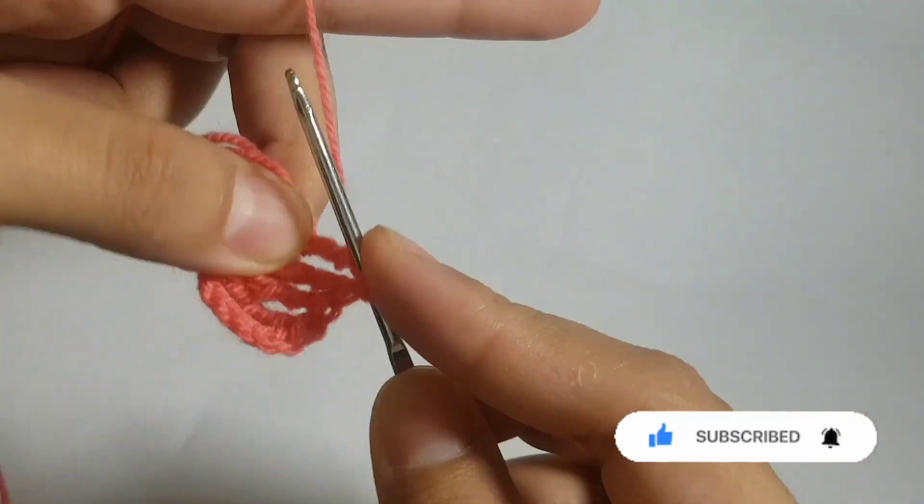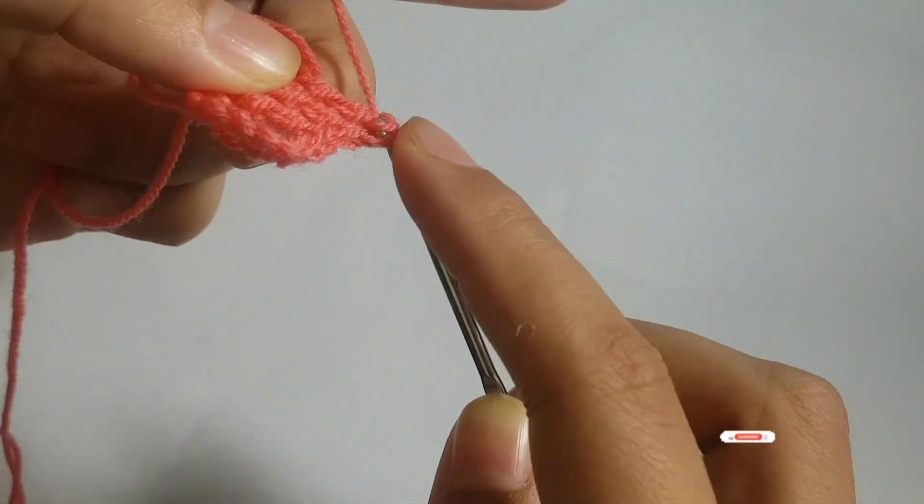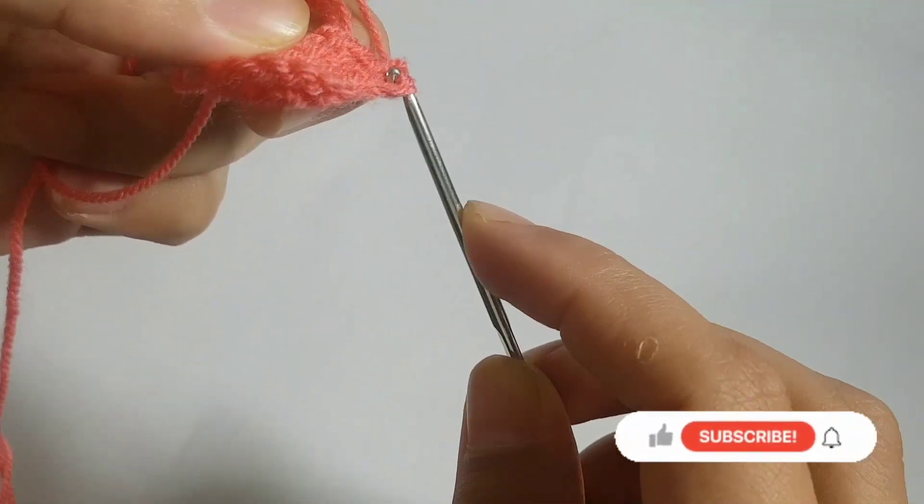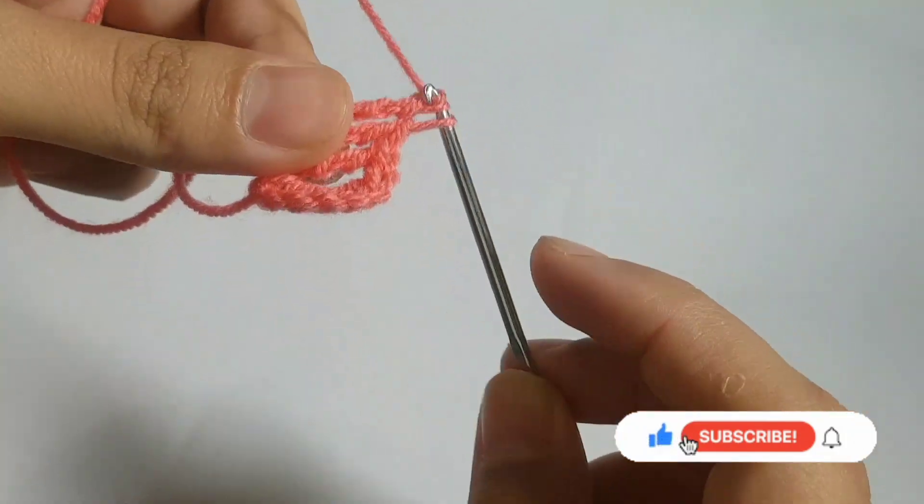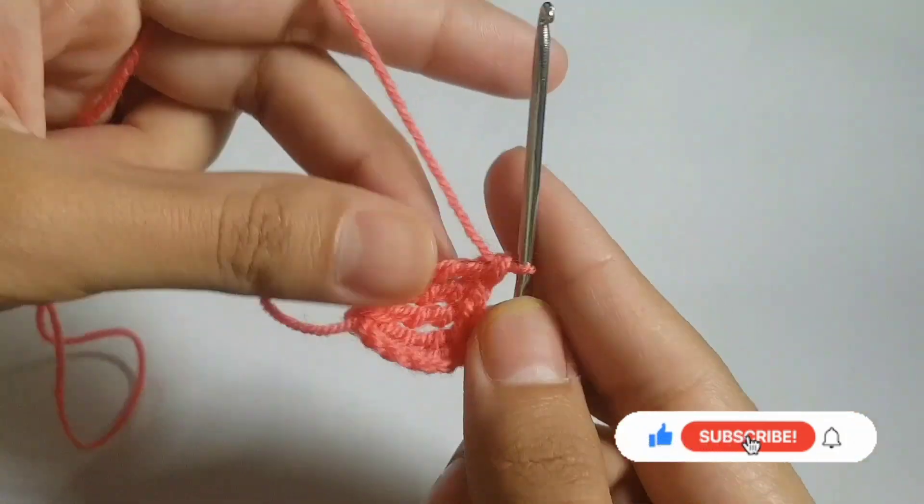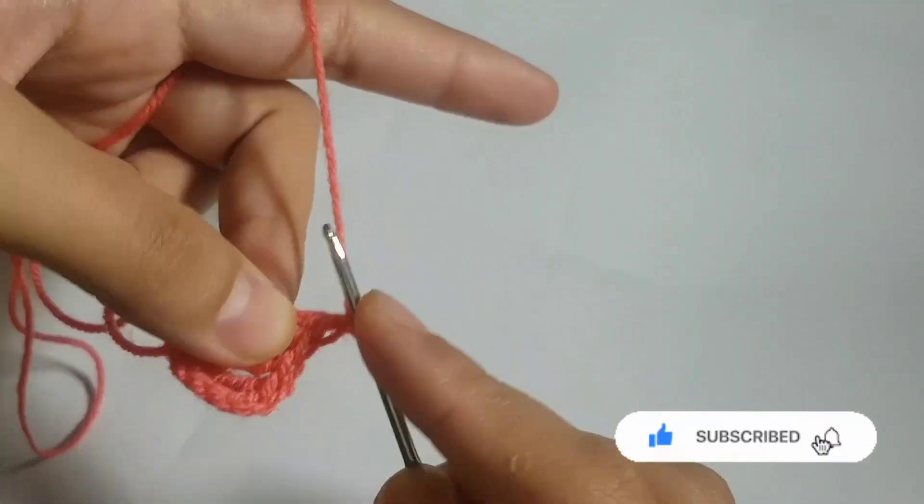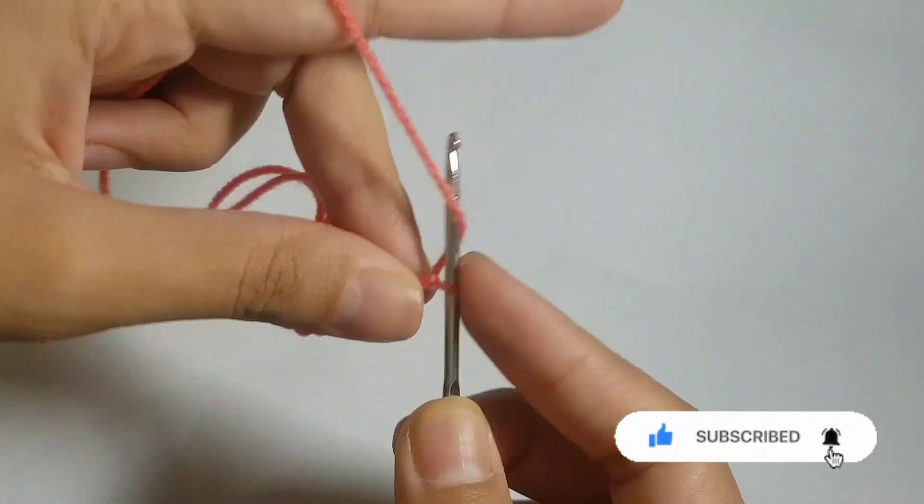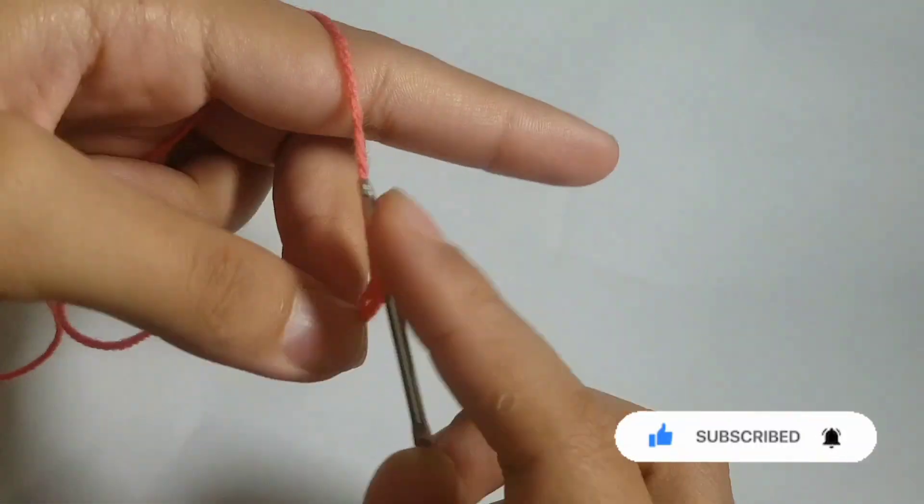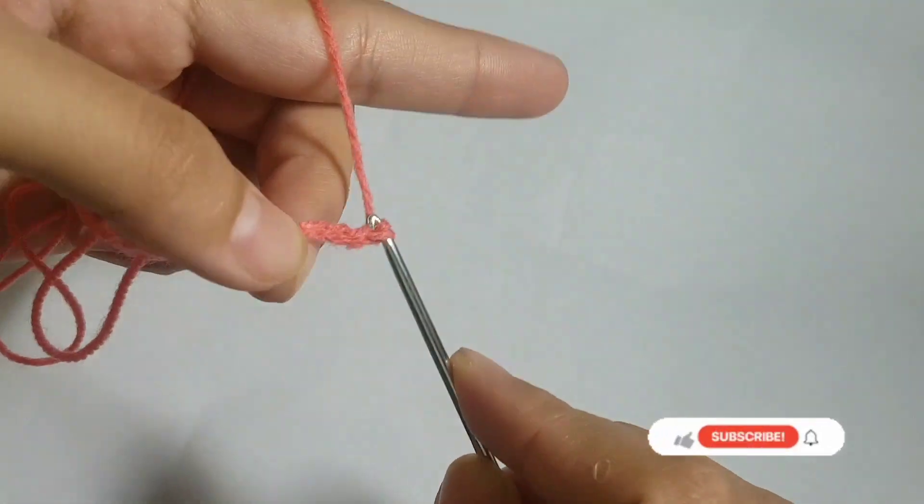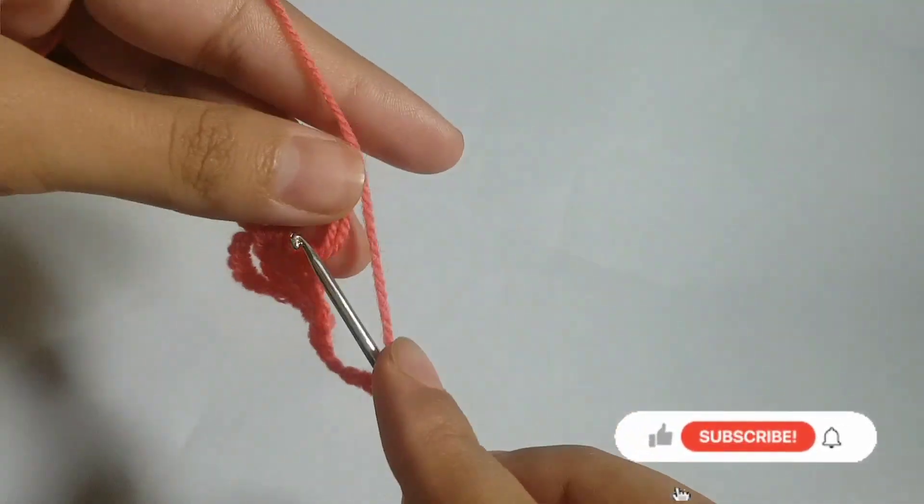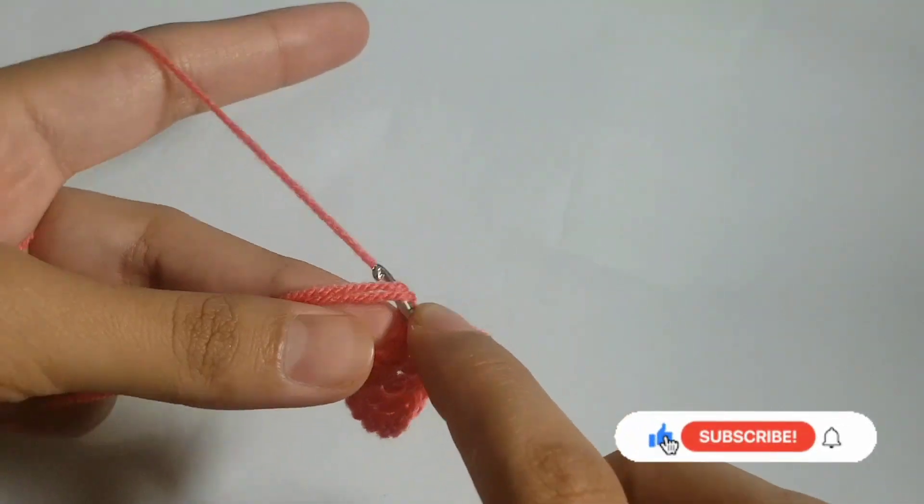Plus three chains, and then we will follow the same way. Now again we will make a total of six chains. After then we will make a slip knot from the magic ring.